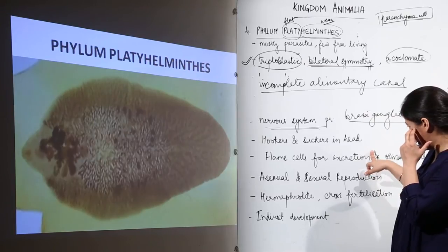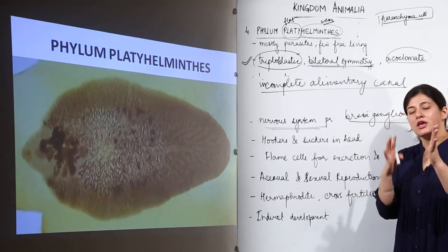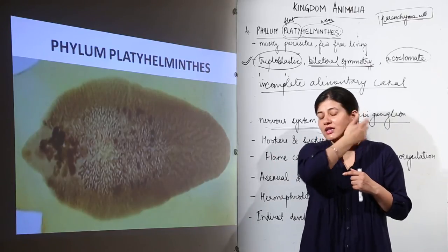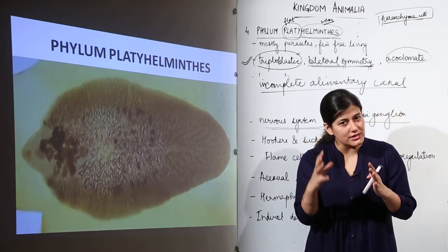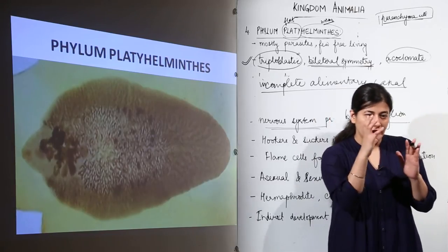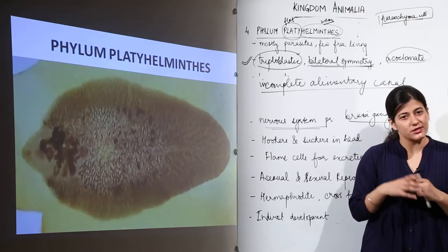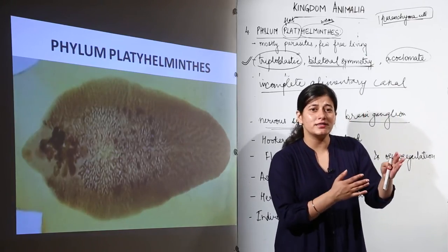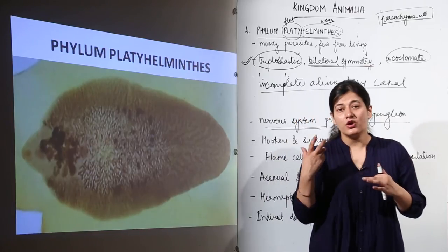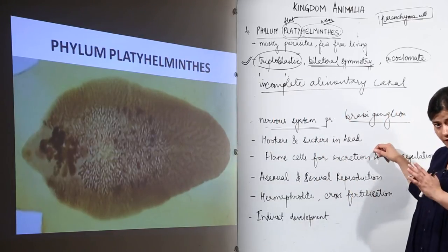They have hooks and suckers in their head region, as seen in tapeworms and liver flukes. These hooks and suckers are important for attaching to the intestinal wall. The third class of platyhelminths are specialized intestinal parasites — they attach to the intestinal wall using hooks and suckers, absorb all nutrition from the intestine, keep growing, and reproduce inside the host body, eventually requiring surgical removal.